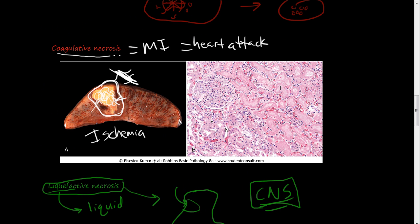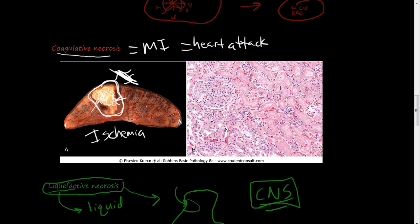And to review real quick, we talked about coagulative necrosis, which is dying of a tissue due to ischemia, and the cell or the architecture of the gland or tissue is still intact.